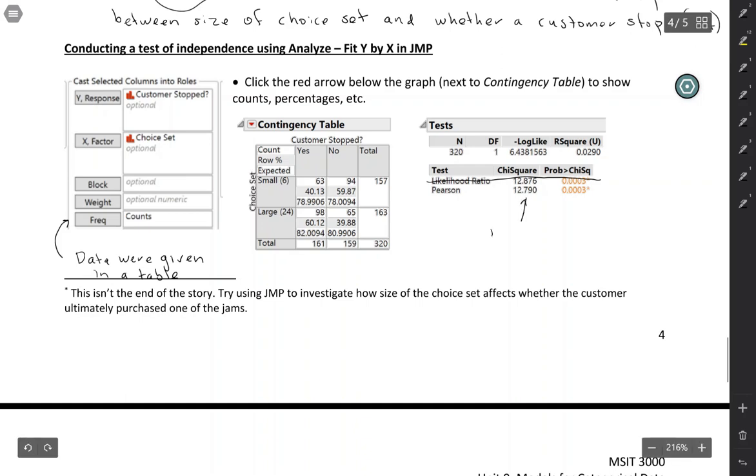So this chi-square, this is our test statistic. And then over here, the probability greater than chi-square, that's our p-value.